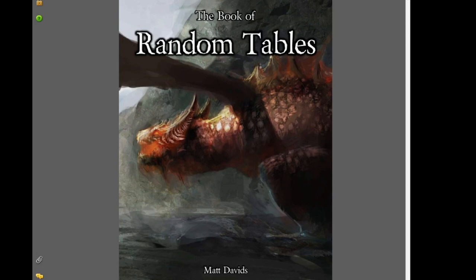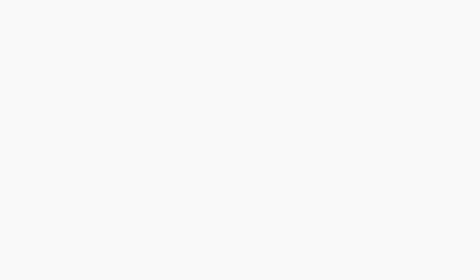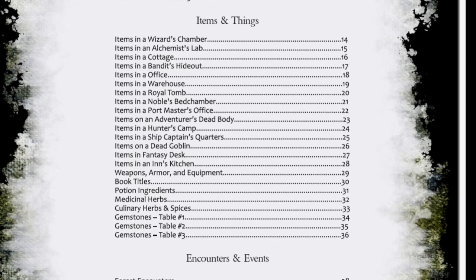Today we're talking about the Book of Random Tables by Matt Davids, published at dicegeeks.com. This is a really fun and incredible resource — just a whole bunch of random stuff. If you look at the table of contents, you'll see male names with three tables, and three tables of female names. The names I used at the beginning of Me Myself and Die were mostly from Xanathar's Guide to Everything, a D&D 5e supplement. Then you've got all kinds of items and things.